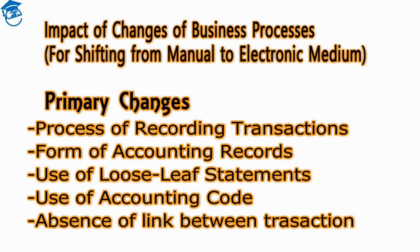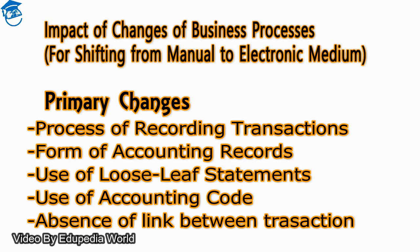The second primary change is the form of accounting records. Mechanization often results in the abandonment of whole or primary parts of traditional books and records. Electronic data processors change the form of both intermediate and ultimate records more radically than manual reports. Earlier we maintained complete books; now everything is transformed and available within the software itself.